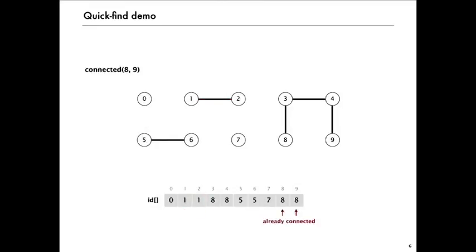8 and 9 are already connected—they have the same entries in the ID array. So that connected query, that find, says true—they're already connected. And 5 and 0 have different entries, they're not connected, so we'd return false in that case.